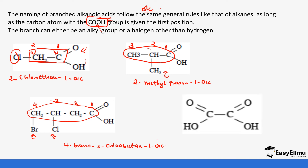Finally, we have one that has two OIC groups. This has two carbons, so that tells you it's ethane. We have the OIC at carbon number one and another one at carbon number two, making it ethanedioic acid. See you soon.